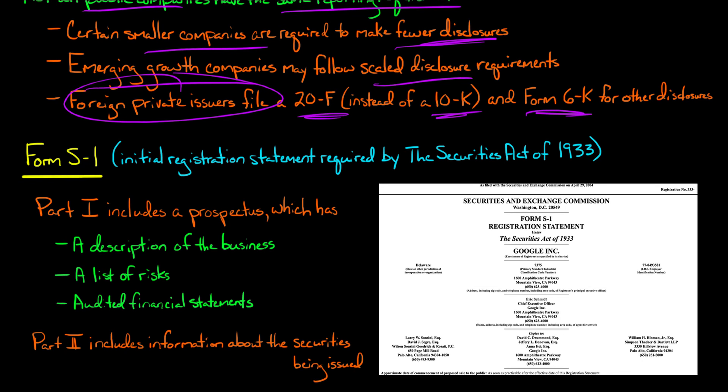Now this S-1 is going to include two parts. Part one includes a thing called a prospectus, and that prospectus is going to have a description of the company's business—what do they do, how do they make money. It's also going to have a list of risks that are faced by that company. It'll talk about the competition, the industry, different things that can go wrong to try and help investors so they know what they're investing in, what kind of risks they're taking on. It'll also have audited financial statements so that investors could look at the company's income statement, balance sheet, and so forth.